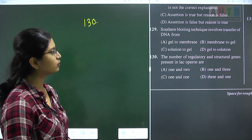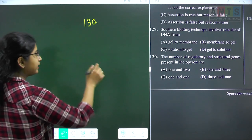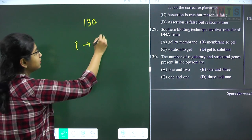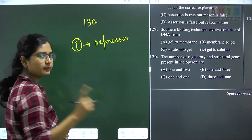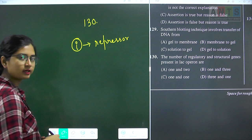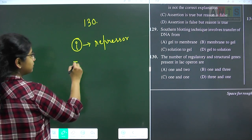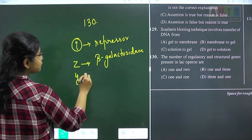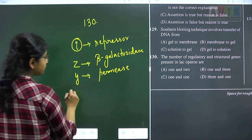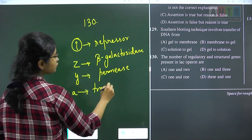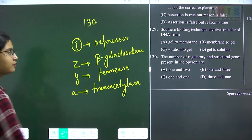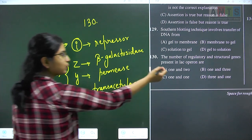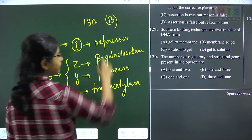Question 130: the number of regulatory and structural genes present in lac operon. There is one regulatory gene — the i-gene — which codes for the repressor protein. This controls three structural genes: the Z gene (beta-galactosidase), the Y gene (permease), and the A gene (transacetylase). So there is 1 regulatory gene and 3 structural genes. Question 130 answer is option B.